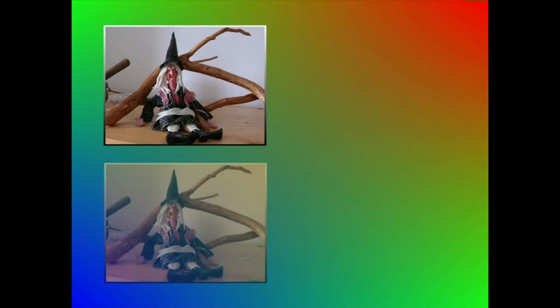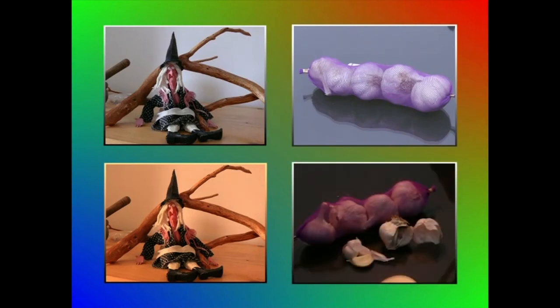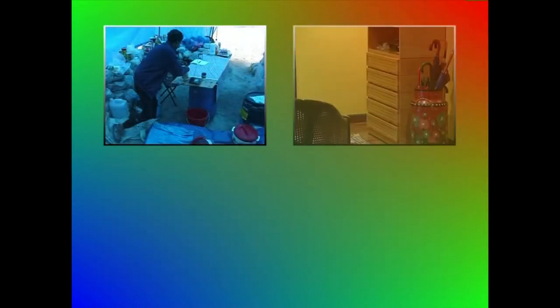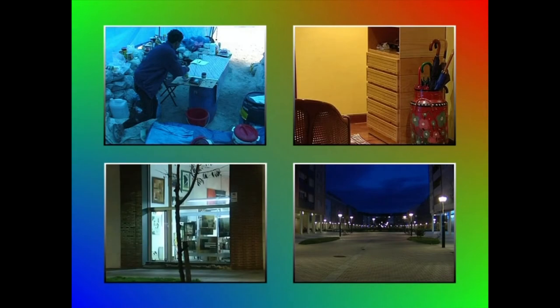Enkuadratzerakoan, kuadroaren barruan hartu ditugun gune zuriak zuri agertzen dira argi naturalaren eraginez. Baina beste erabilera batzuetako argien eraginpean, beste tonu batzuk islada daitezke argazkian. Ikusmenezko efektu hori dekoratua argitzeko erabili ditugun argien kolore temperaturagatik gertatzen da.